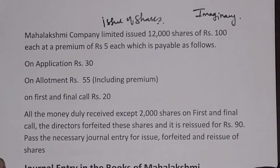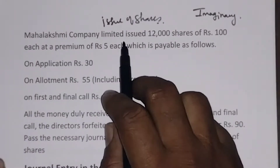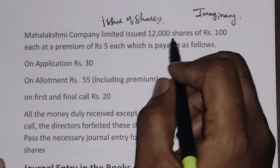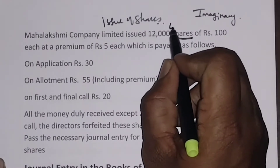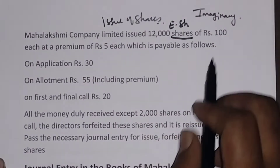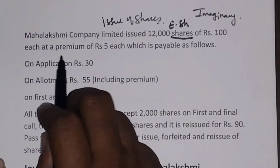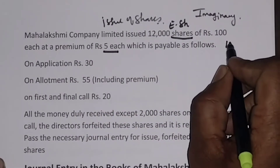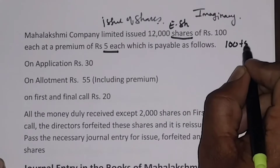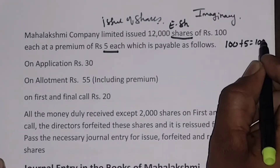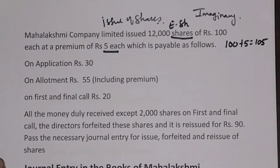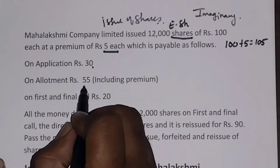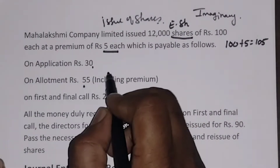Now let us see the problem. Mahalakshmi Company Limited issued 12,000 shares — equity shares of Rs. 100 each at a premium of Rs. 5 each. That means overall Rs. 100 plus Rs. 5 equals Rs. 105 will be collected from the public. On application, Rs. 30. On allotment, Rs. 55 including premium.